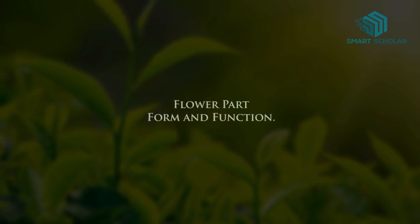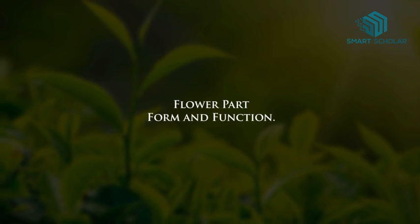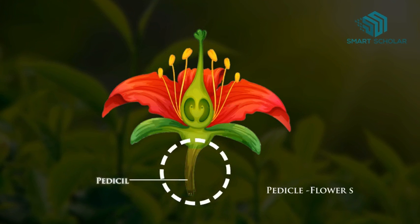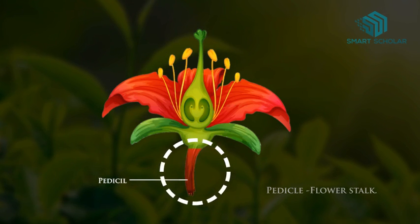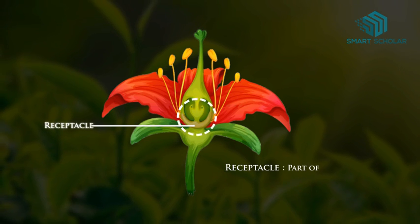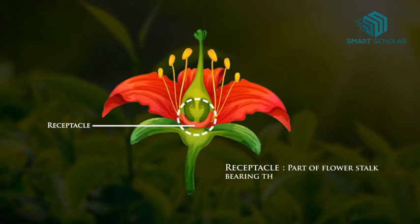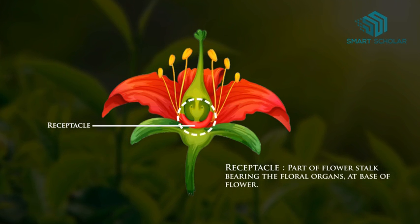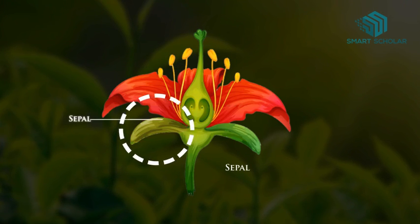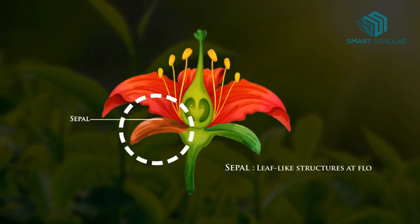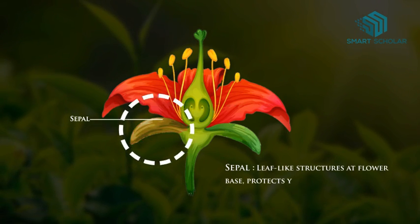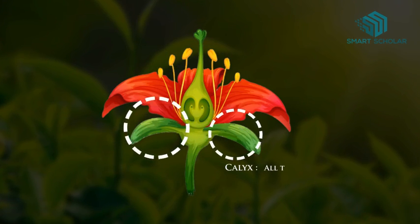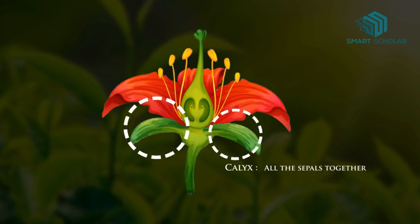Flower parts and their form and function. Peduncle: the flower stalk. Receptacle: the part of the flower stalk bearing the floral organs at the base of the flower. Sepal: leaf-like structures at the flower base that protect the young flower bud. Calyx: all the sepals together form the calyx.